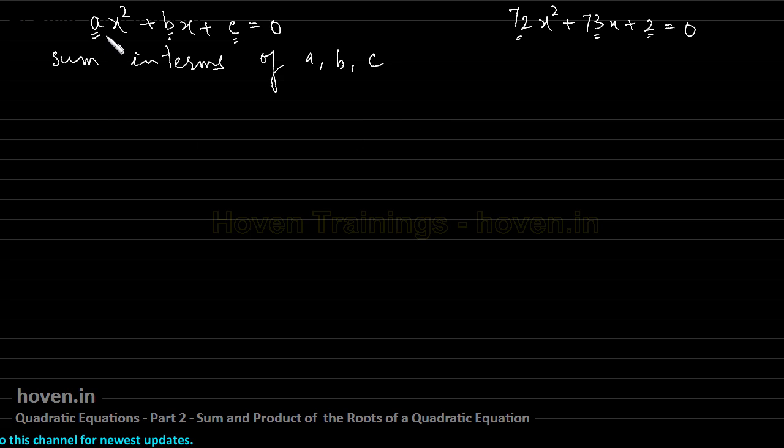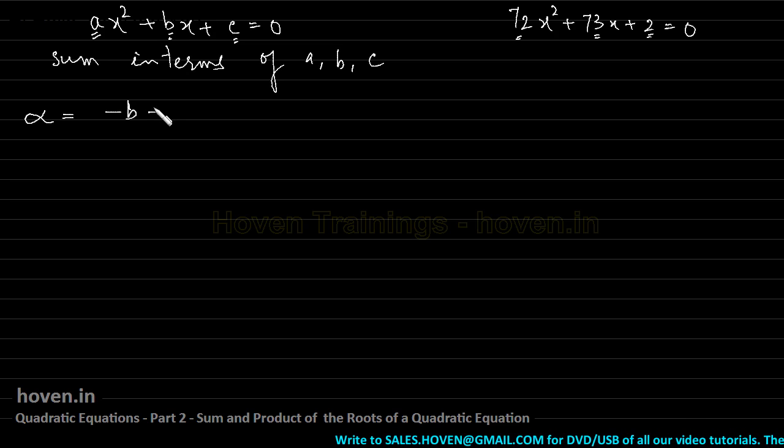We know that this is the most standard form of the quadratic equation. We also know from our previous lecture that one of the roots, let us call it alpha. Alpha is a Greek symbol that is usually used to denote the first root of this equation. So let alpha be minus b plus square root of d divided by 2a.